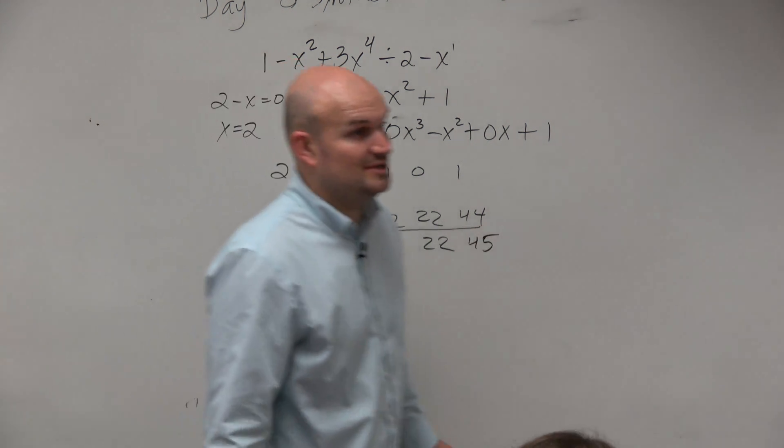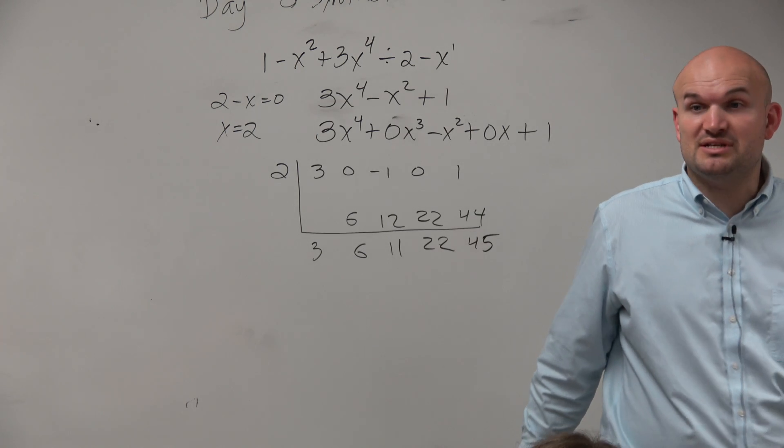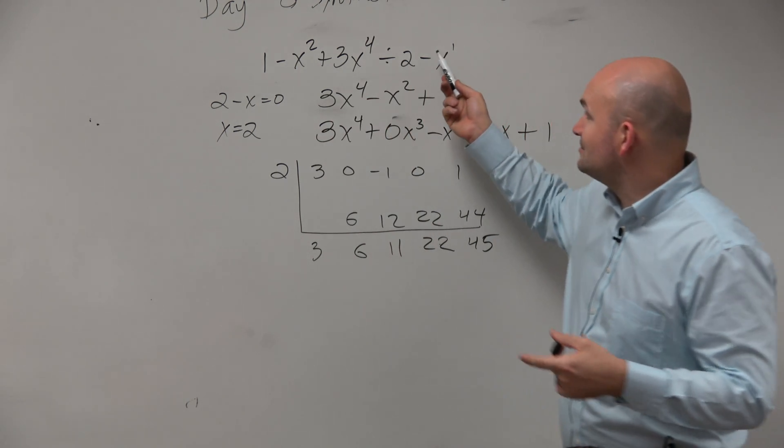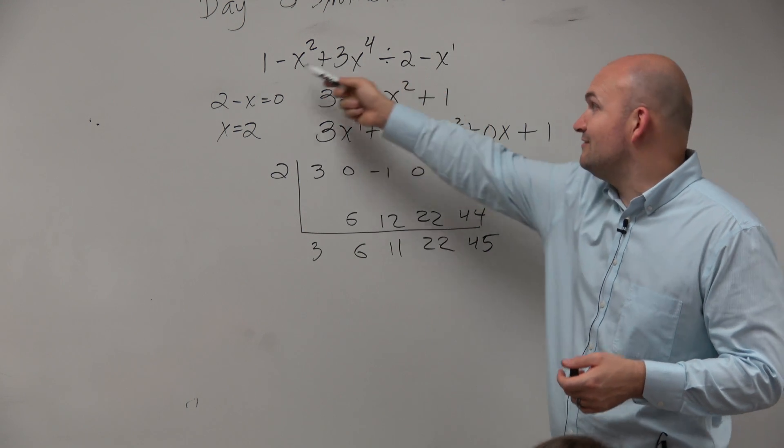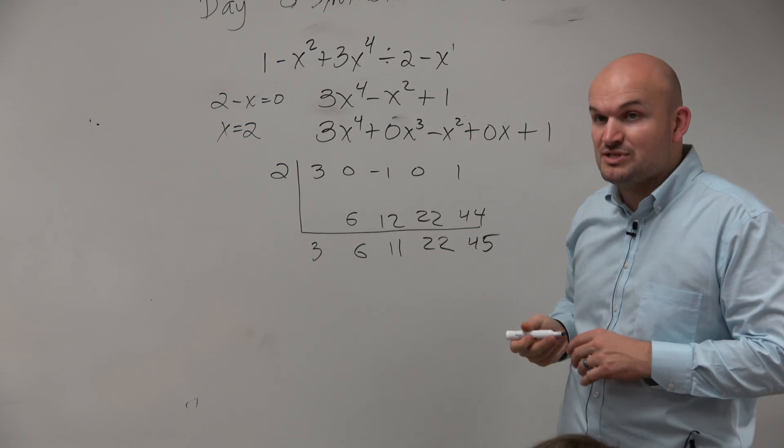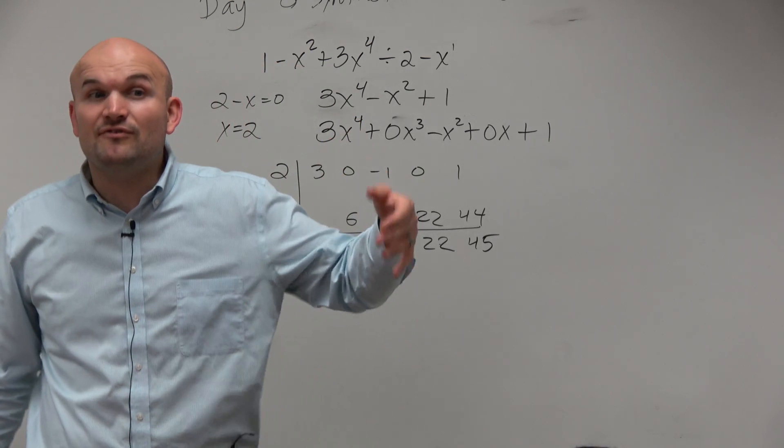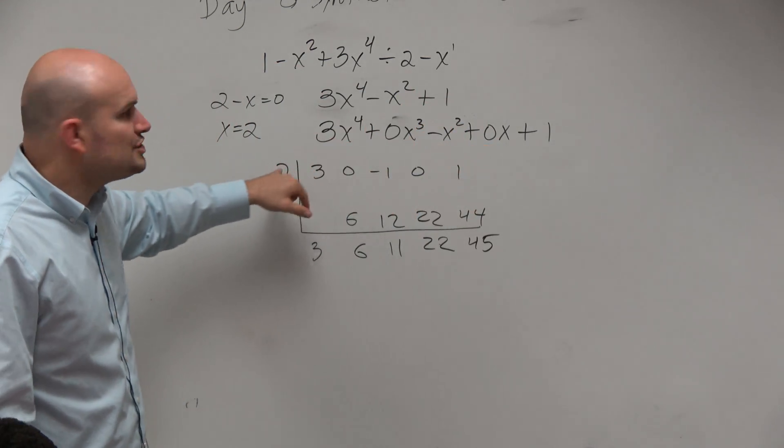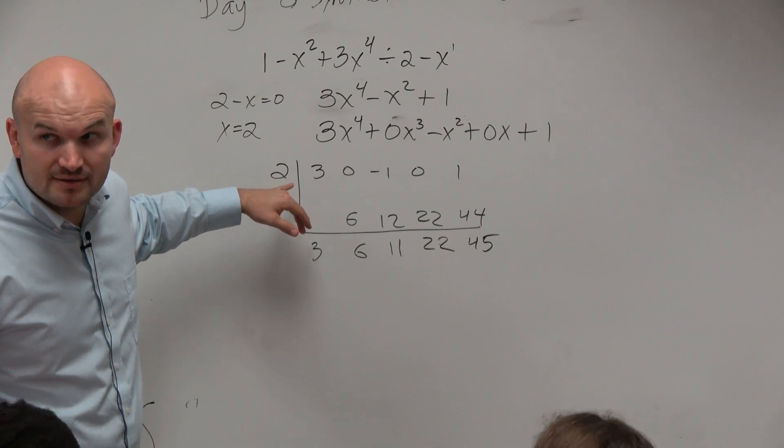So you see, obviously, guys, we have a remainder here, right? 2 minus x is not evenly divided into this 1 minus x squared plus 3x to the fourth. It doesn't evenly divide, so therefore, we know it's not a factor. And since it's not a factor, we know that 2 is not a 0. Would you guys agree with me? Yes. OK.